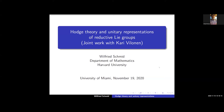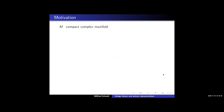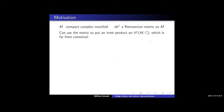Let me start out with some motivation. Suppose M is a compact complex manifold with Riemannian metric ds squared. Then I can use the metric to put an inner product on the de Rham cohomology, which, however, is far from canonical — it depends very much on the choice of metric.